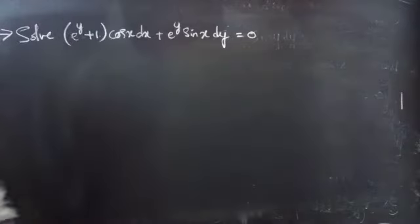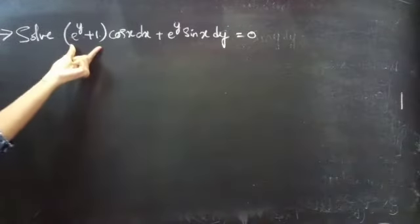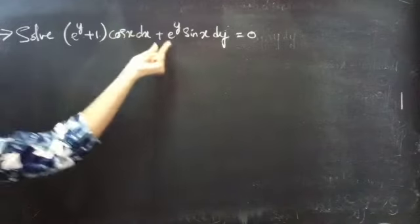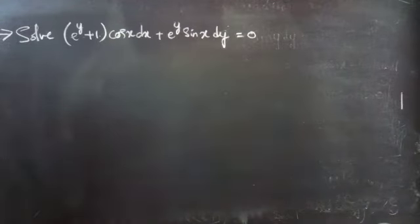Problem. Solve: e power y plus 1 into cos x dx plus e power y sin x into dy equals to 0. Solution.